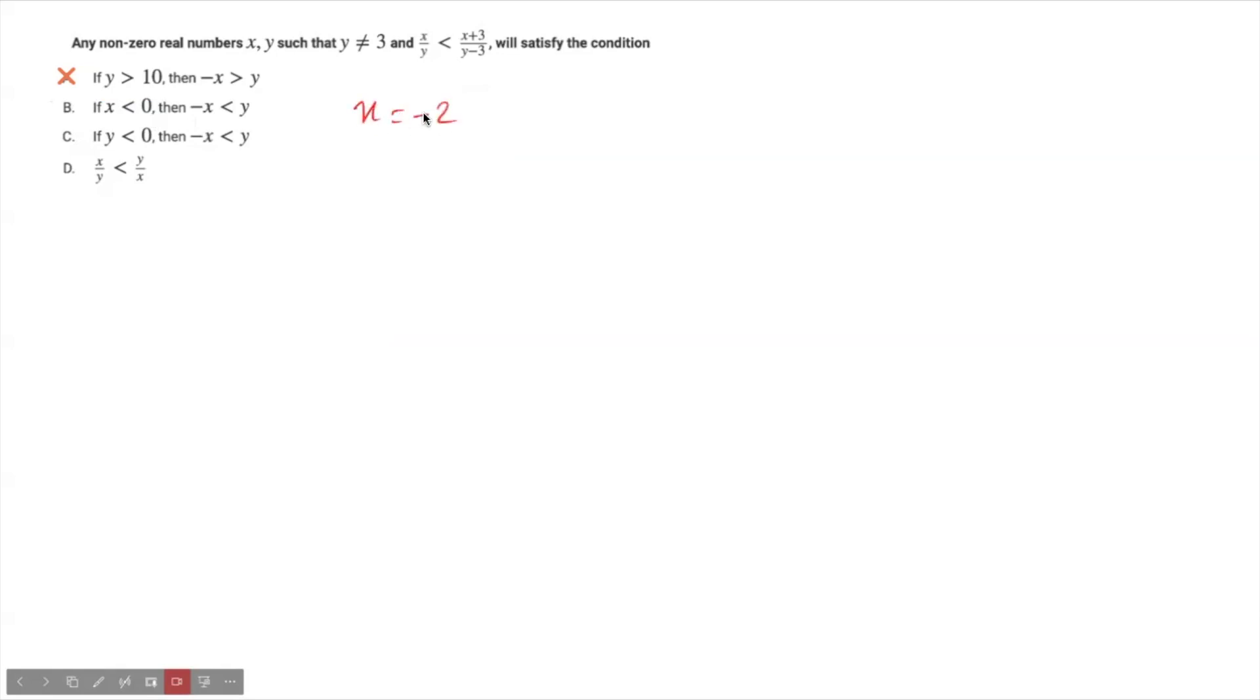Let's take x is equal to minus 2. Then we must get minus x to be less than y. So, minus of minus 2 will be less than y. Minus of minus 2 is 2. 2 less than y. That tells you y is greater than 2. We must get this.